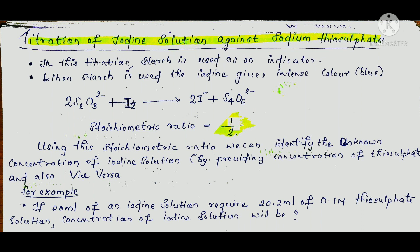Now we will take an example. The question is: if 20 ml of an iodine solution requires 20.2 ml of 0.1 molar thiosulfate solution, what is the concentration of the iodine solution?